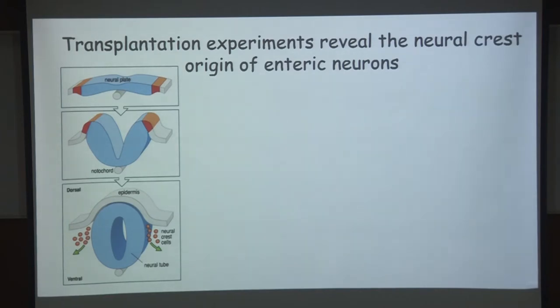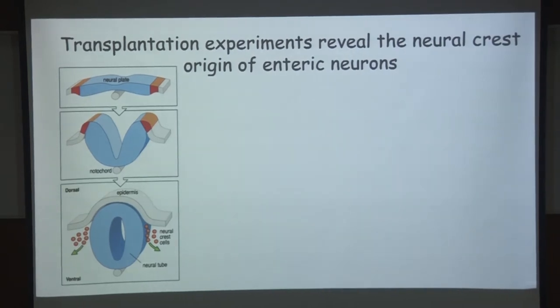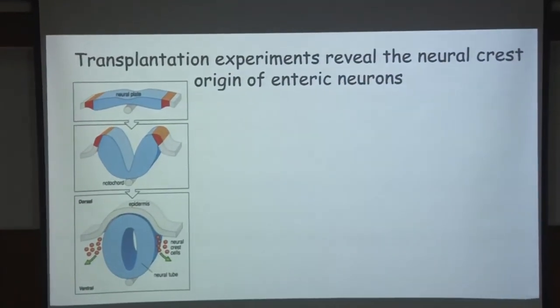If you wanted to know the origin of the enteric neurons — the neurons that surround your gut tube — you can address this experimentally. You have the central nervous system comprising brain and spinal cord, and then other neurons around internal organs that control their functions. There is something around your gut that controls its motility and contractions of the smooth muscles there — and that is derived from neural crest cells.